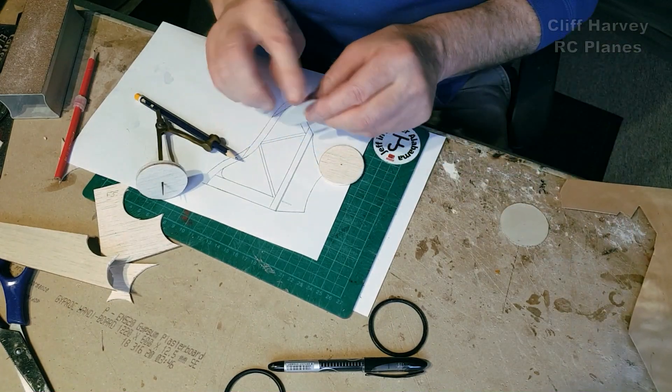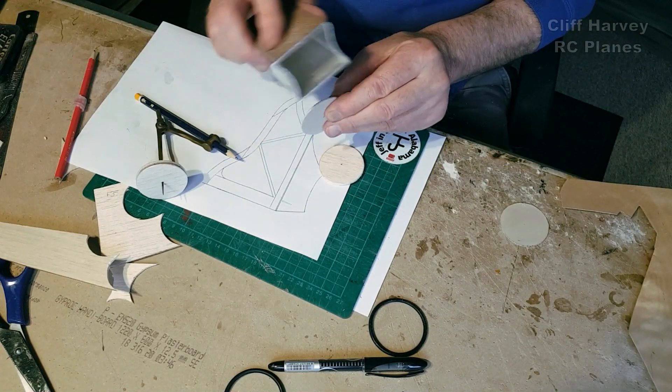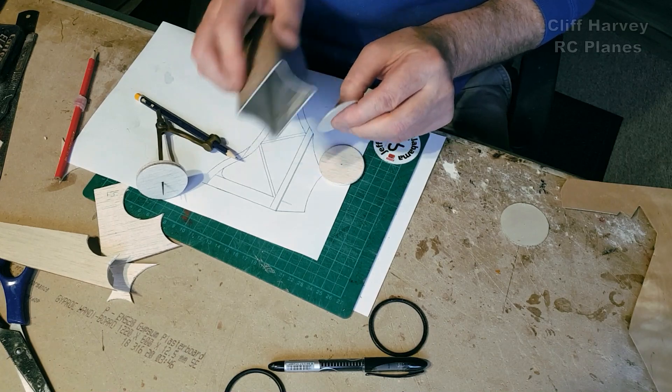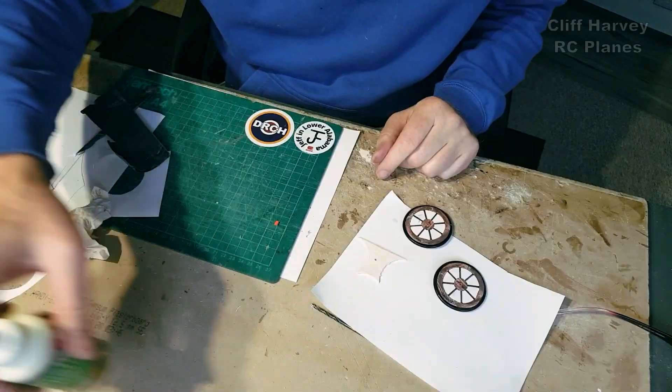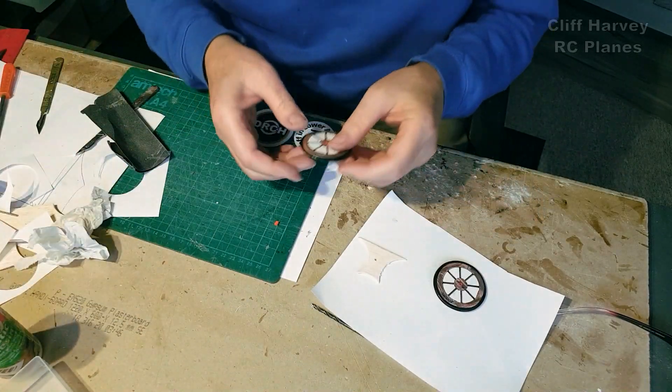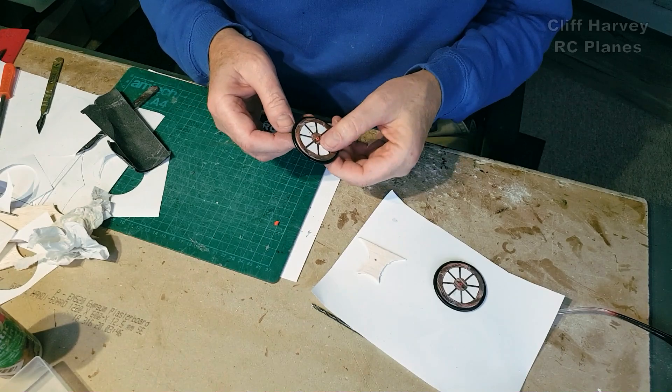Cut out my sixteenth discs and I've beveled the inside edge here to light it to accept the tire. Right, that's number two done. How are we looking then?